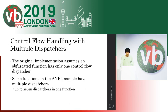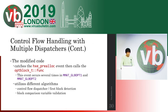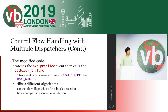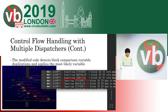In ANEL code, one function can have multiple control flow dispatchers, which is not considered in the original implementation. So the modified code catches the decompiler callback event, then calls the opt_block_t callback function several times. According to HexRays, this is the final event for optimizations. Usually the block comparison variable is unique in one function, but a few functions with multiple control flow dispatchers have duplicated variables. So the modified code detects duplications and applies the most likely variable in the current dispatcher by validating block numbers.